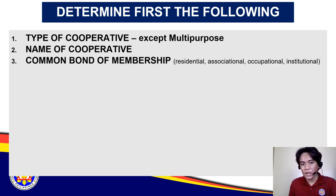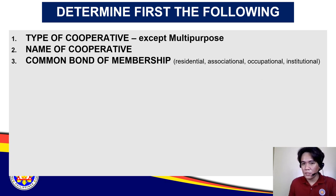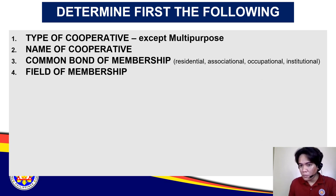Third, you should already know what kind of common bond of membership you will register. There are four types of common bond: residential, associational, occupational, and institutional. I hope you remember the common bond of membership. Out of the common bond, you must also determine your field of membership.